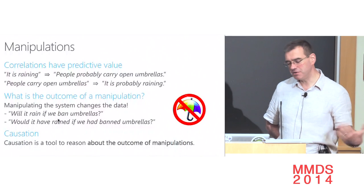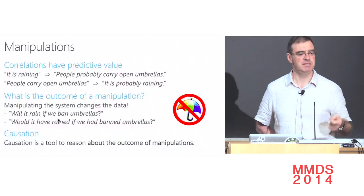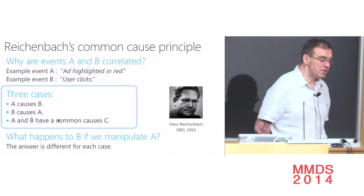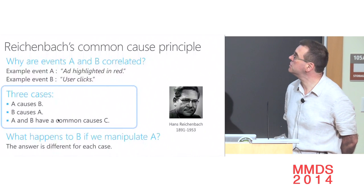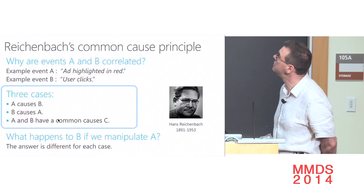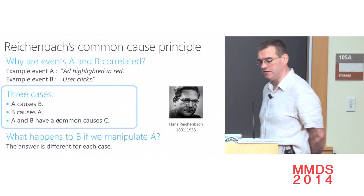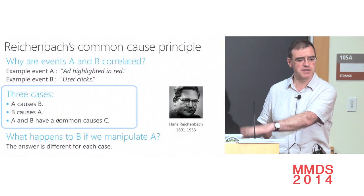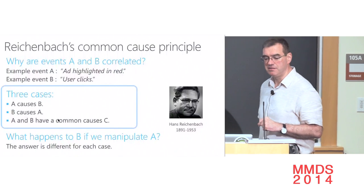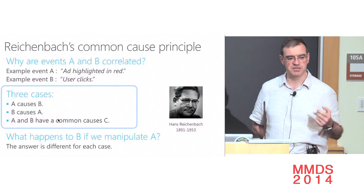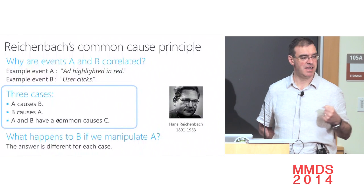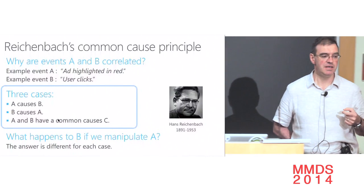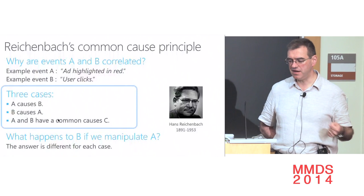We do chains of reasoning that use, as one step, a fact like 'the earth is round,' and that string of reasoning operations leads to something we can test and manipulate. One has to understand the relation between correlation and causation. Reichenbach in the 1950s tried to answer the question fundamental in physics: why are two observed events correlated? Taking the ads example — event A is something highlighted in red, event B is a user click — and suppose we see a correlation. There are only three cases: either A causes B, B causes A, or A and B have a common cause.